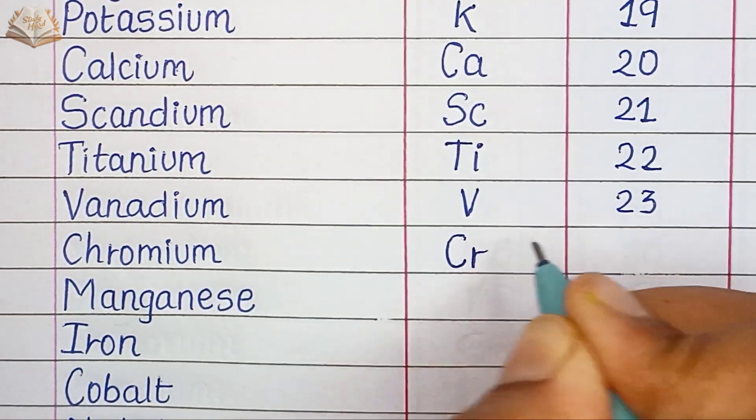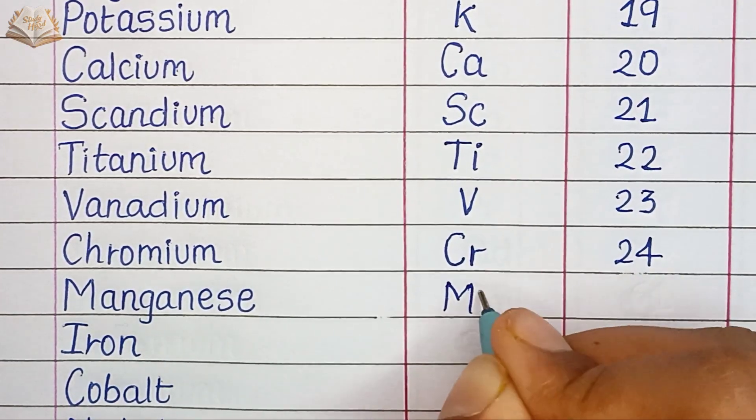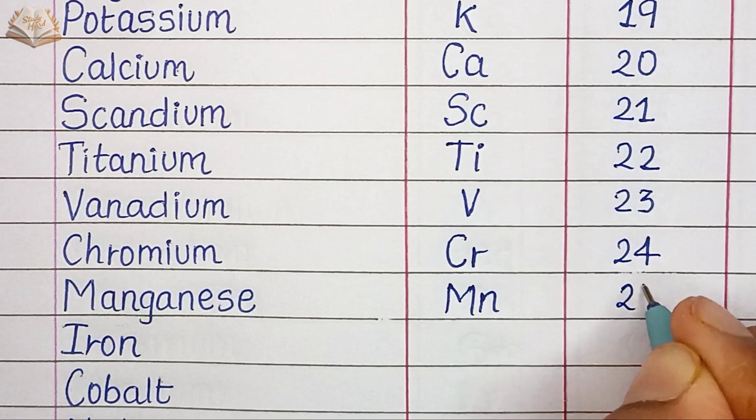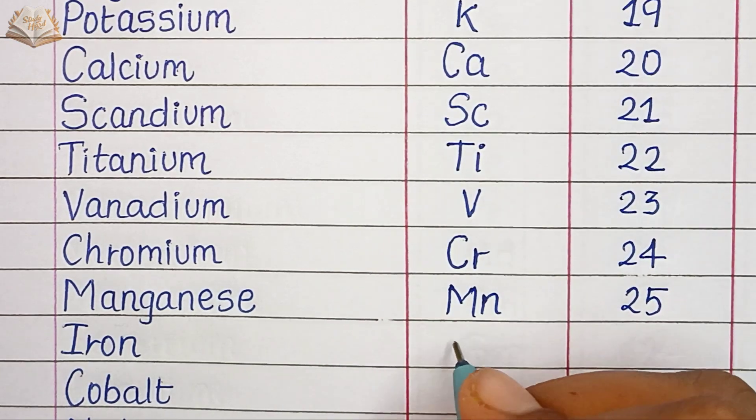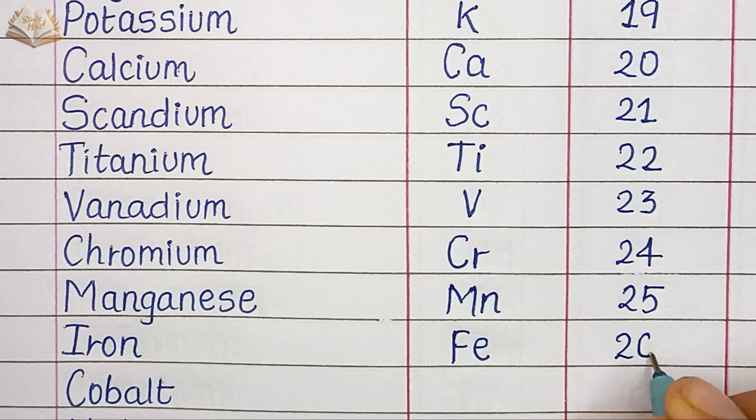Chromium, CR, atomic number 24. Manganese, MN, atomic number 25. Iron, Fe, atomic number 26.